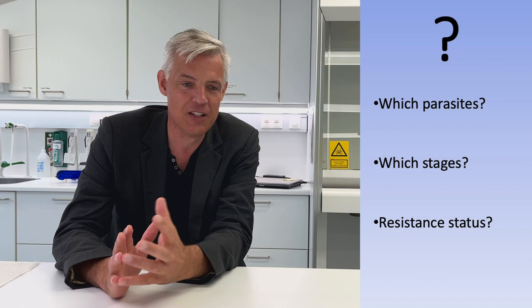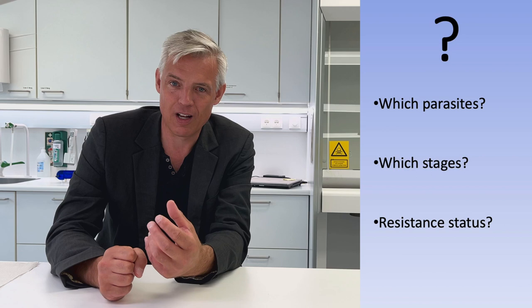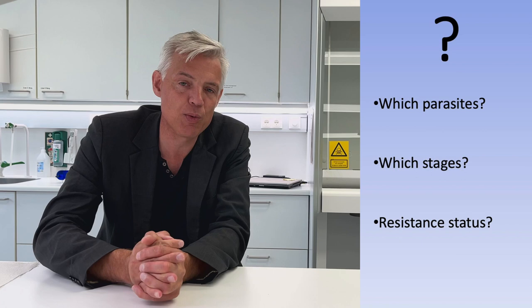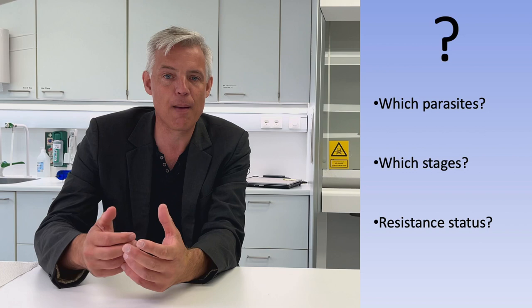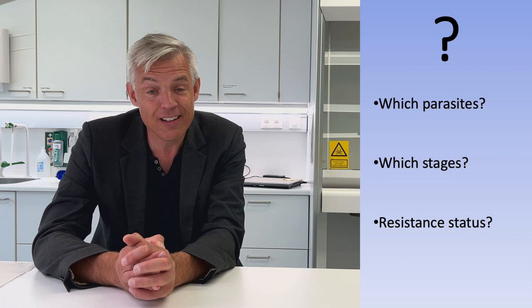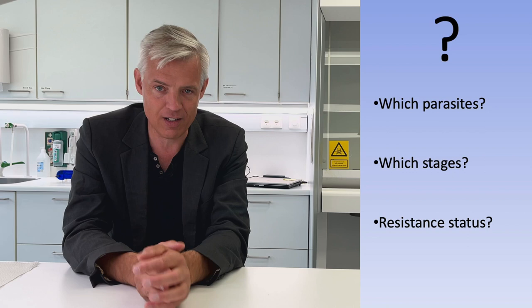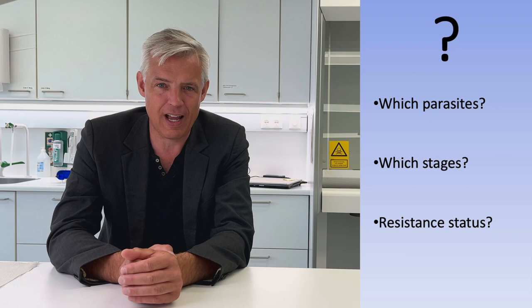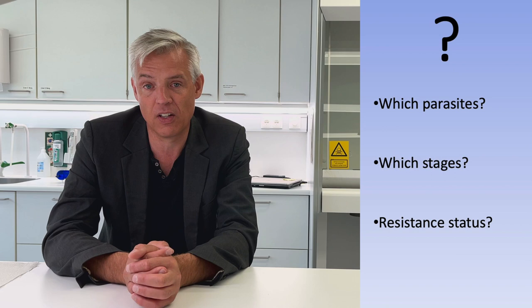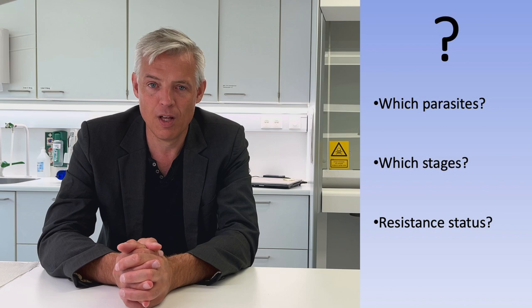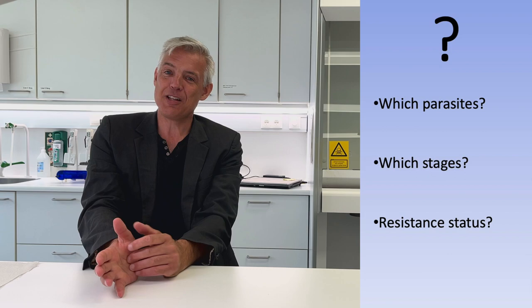The first question is: what parasites are we wanting to treat? We need to know what parasites are present before we can choose an appropriate product. Not just what parasites are there — sometimes we want to know whether there are particular larval stages we're interested in treating. Then the third question is: what is the resistance status on this particular premises? Resistance levels really need to be tested for that specific operation, though general global patterns do exist.